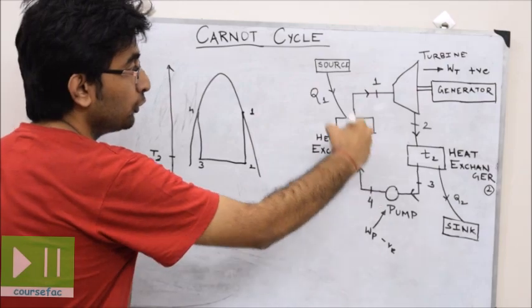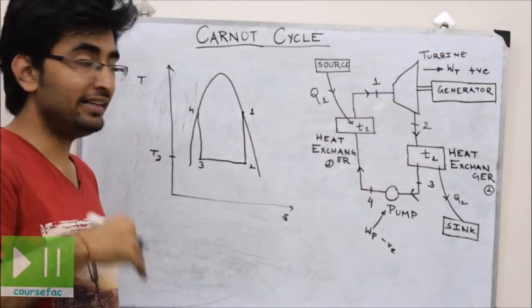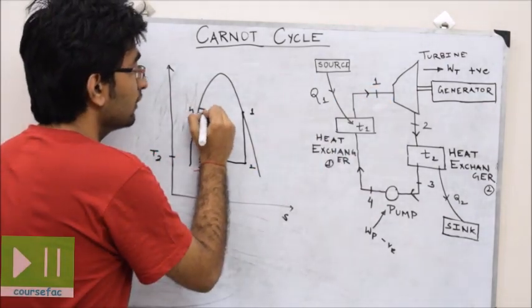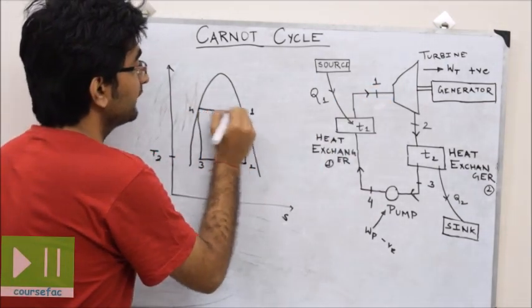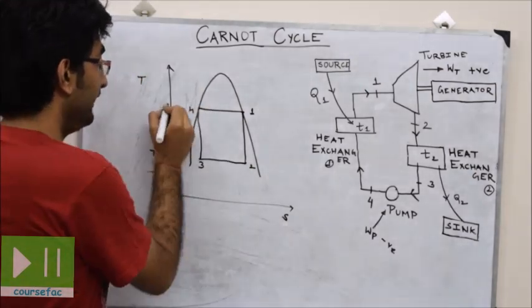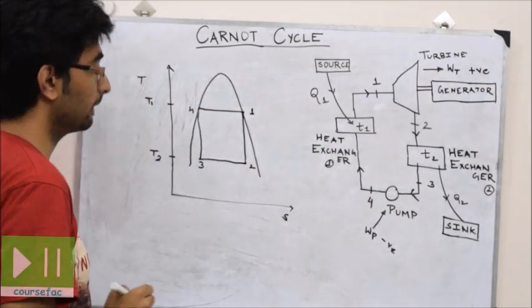From 4 to 1, we have isothermal heat addition. Water gets converted into steam from 4 to 1, occurring at constant temperature T1.